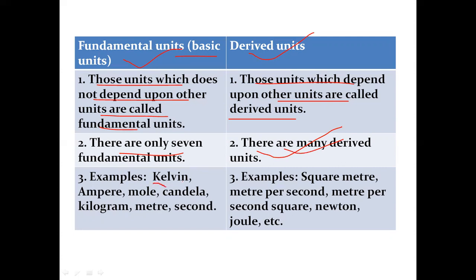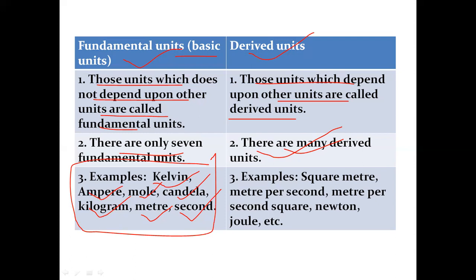Examples of fundamental units: Kelvin is the unit of temperature, Ampere is the unit of electric current, Mole is the unit of amount of substance, Candela is the unit of luminous intensity, Kilogram is the unit of mass, Meter is the unit of length, and Second is the unit of time. For derived units: square meter is the unit of area, meter per second is the unit of velocity or speed, meter per second squared is the unit of acceleration, Newton is the unit of force, and Joule is the unit of work or energy. The units of derived quantities are known as derived units.